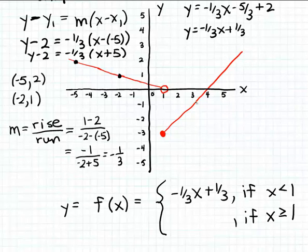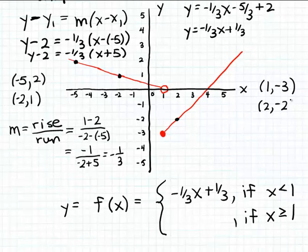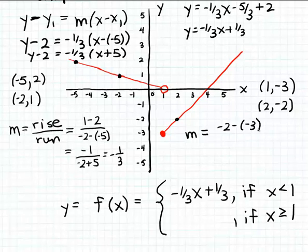Let's locate a couple of points on the line on the right-hand side. One point obviously appears to be (1, −3), and a second point looks like it's (2, −2). Now let's calculate the slope using the rise-over-run formula: the difference in y-coordinates is −2 minus (−3), divided by the difference in x-coordinates which is 2 minus 1. That gives us (−2 + 3)/1 = 1.